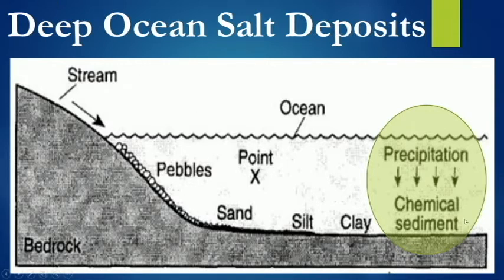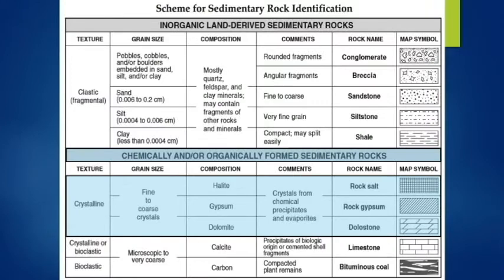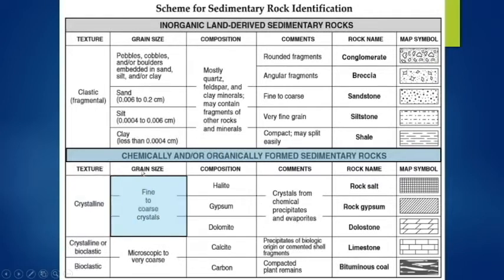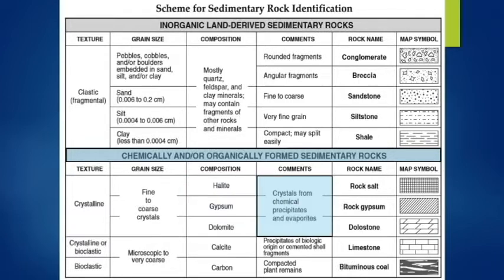There's also horizontal sorting and all the way out in the deep ocean you can get precipitation of chemicals falling to the ocean floor — not through evaporation, but through precipitation from a supersaturated solution falling to the ocean floor. In the reference table you can see the texture is crystalline. Your chemical crystalline rocks are fine to coarse. The composition includes minerals: halite — that rock salt from the Dead Sea — gypsum, dolomite — these are all found on page 16 in the reference table. It says crystals from chemical precipitates and evaporites. Evaporite lakes — and here are the map symbols.